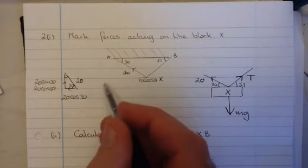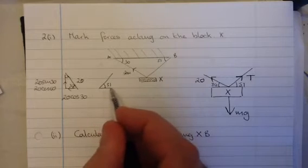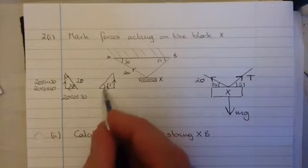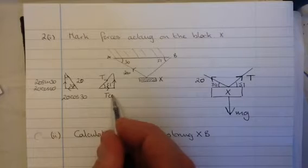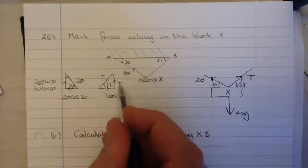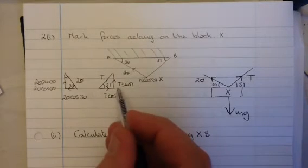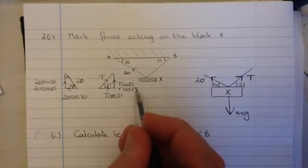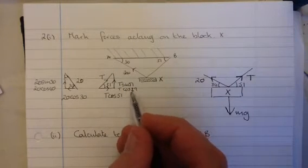So we've got this T force at 51. So we want to resolve it horizontally in that direction, vertically in that direction. So again, this is T, this will be T cos 51, and this one T sin 51. Or, you could also say it's T cos 29, sorry, 39, I'm going to make it 90. Okay.